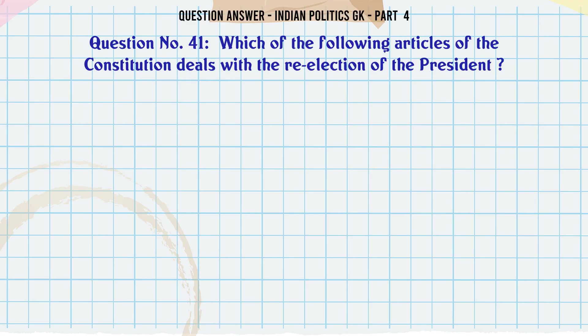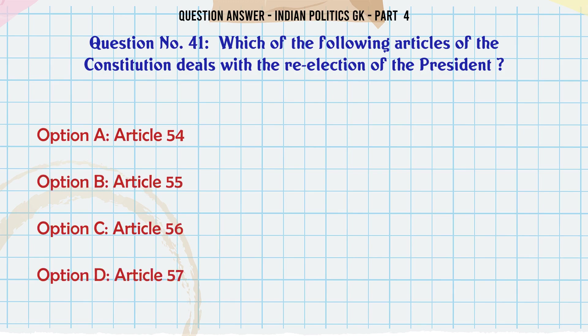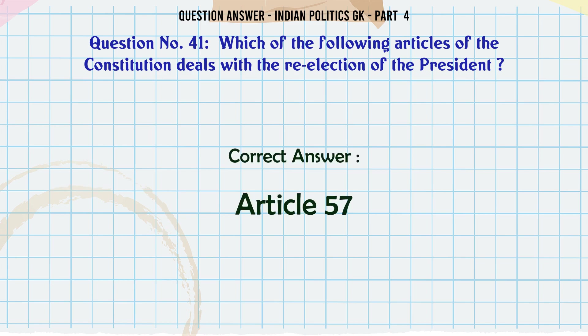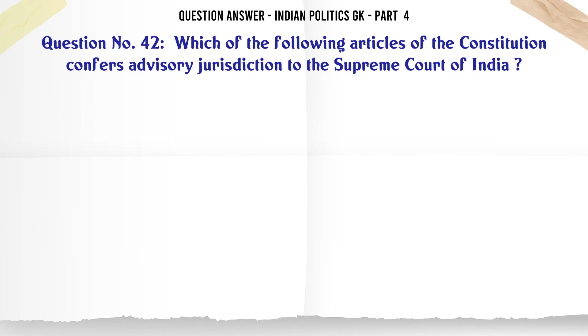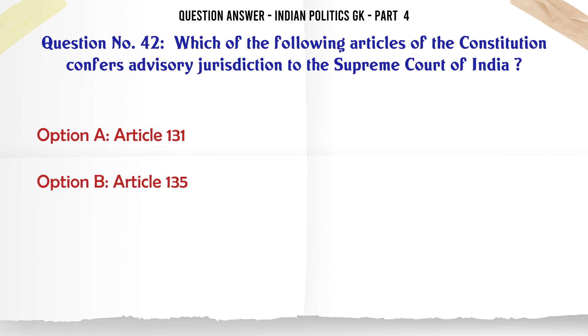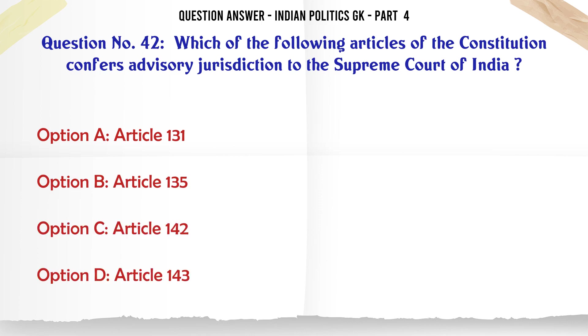Which of the following articles of the Constitution deals with the re-election of the President? A. Article 54. B. Article 55. C. Article 56. D. Article 57. The correct answer is Article 57.